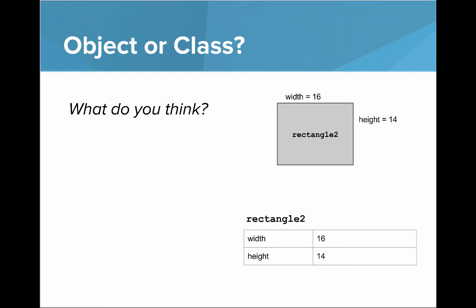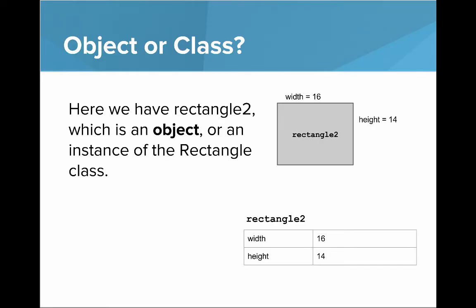Here we have a rectangle called rectangle2. Is this an object or a class? What do you think? It's an object, an instance of the Rectangle class. It has a specific width and a specific height.